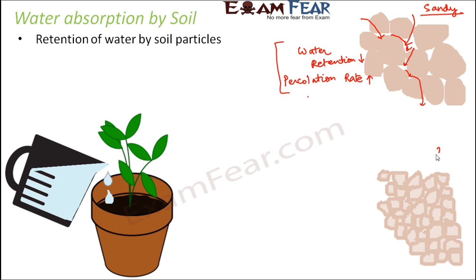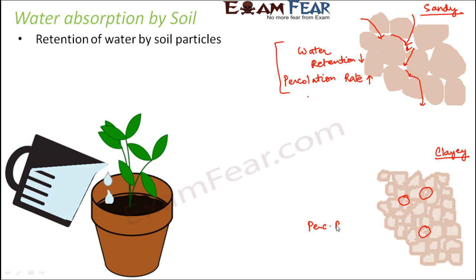Now let us take the example of clayey soil. In case of clayey soil, the size of the particles is small and the particles are very tightly bound to each other. The spaces between them are very small or almost not there — very tiny spaces in between. Through these tiny spaces, water really cannot drain quickly.